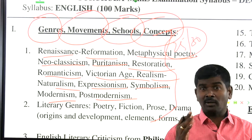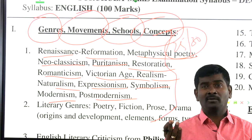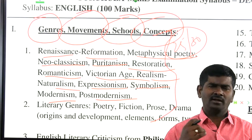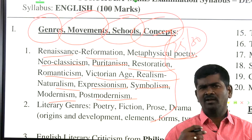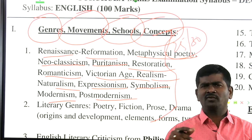Metaphysical School of Poetry includes John Donne, Andrew Marvell, Abraham Cowley, John Cleaver, George Herbert, Henry Vaughan, Richard Crashaw, and Thomas Traherne — all popular Metaphysical Poets. Who coined the term 'metaphysical'? John Dryden. Who popularized it? Dr. Johnson. Who wrote 'The Metaphysical Poets' essay in 1921? T.S. Eliot.